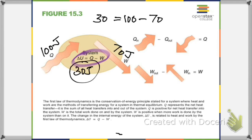There are important sign conventions. If heat enters the system, Q is positive; if heat leaves, Q is negative. Work done by the system is positive (e.g., gas expanding); work done on the system is negative (e.g., manually compressing the piston). Write this down: work done by the system is positive, work done on the system is negative.